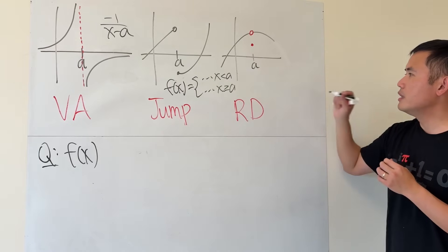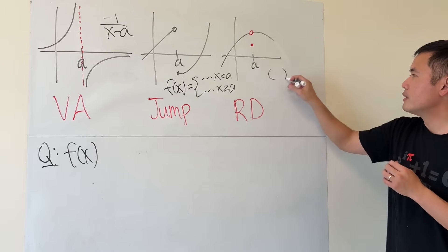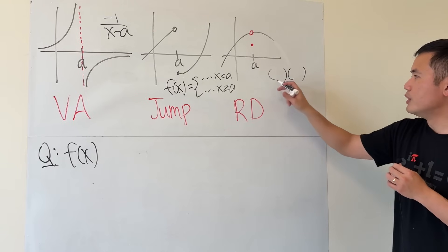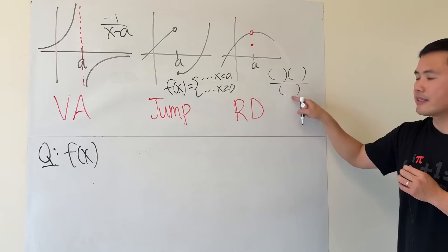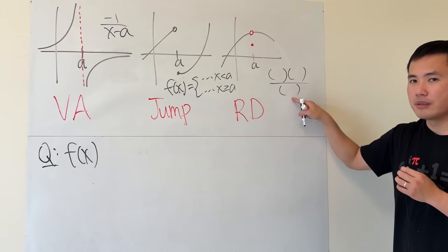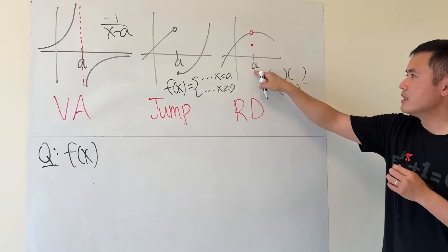Lastly, for this one right here, it's usually that you have a rational situation, but you will get a common factor right here, top and bottom. And because we have x at a, so most likely you will have x minus a, x minus a.